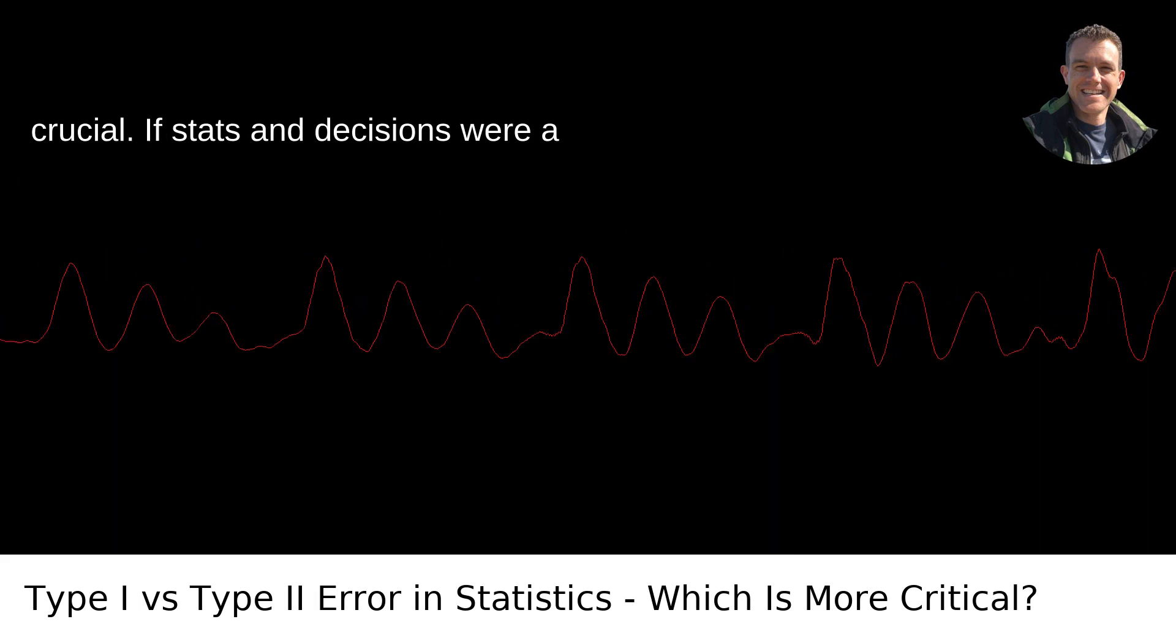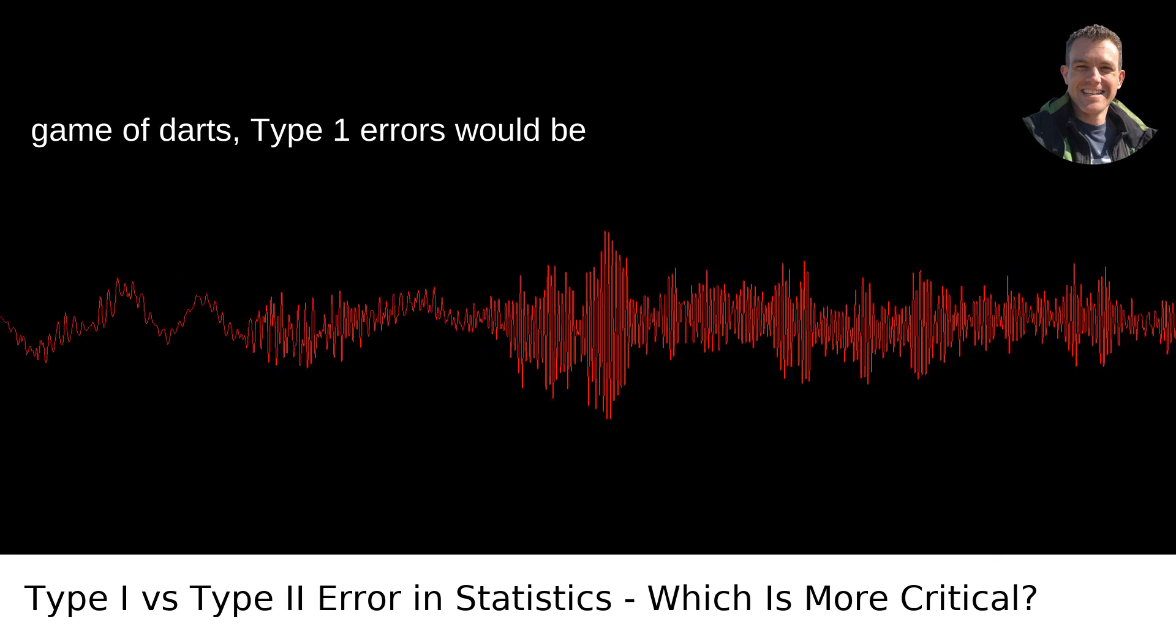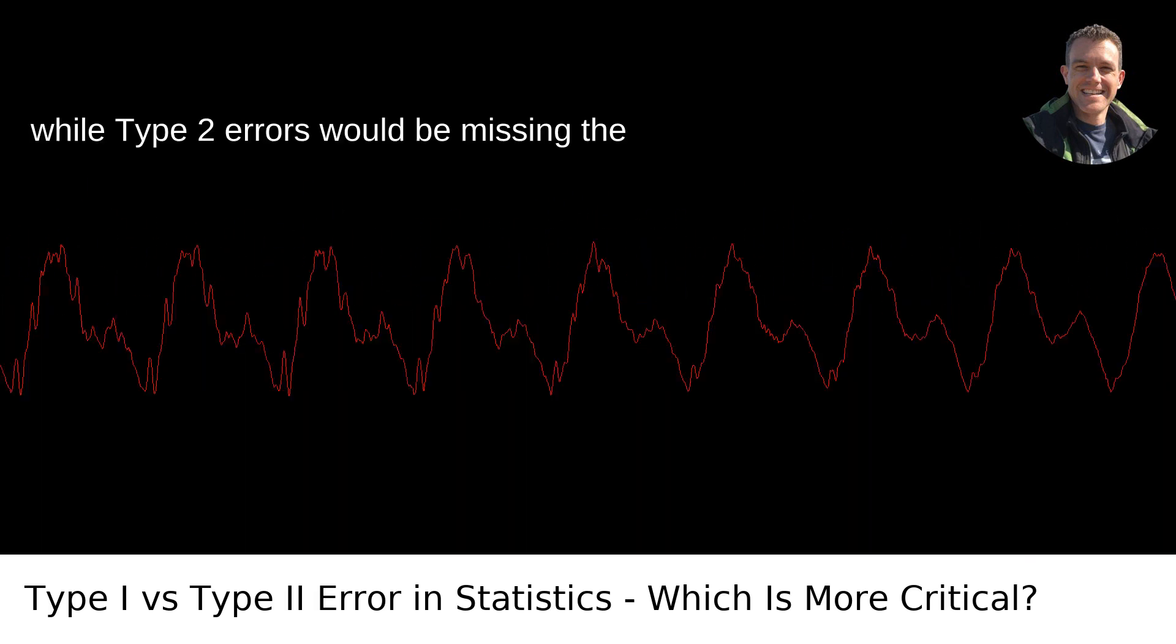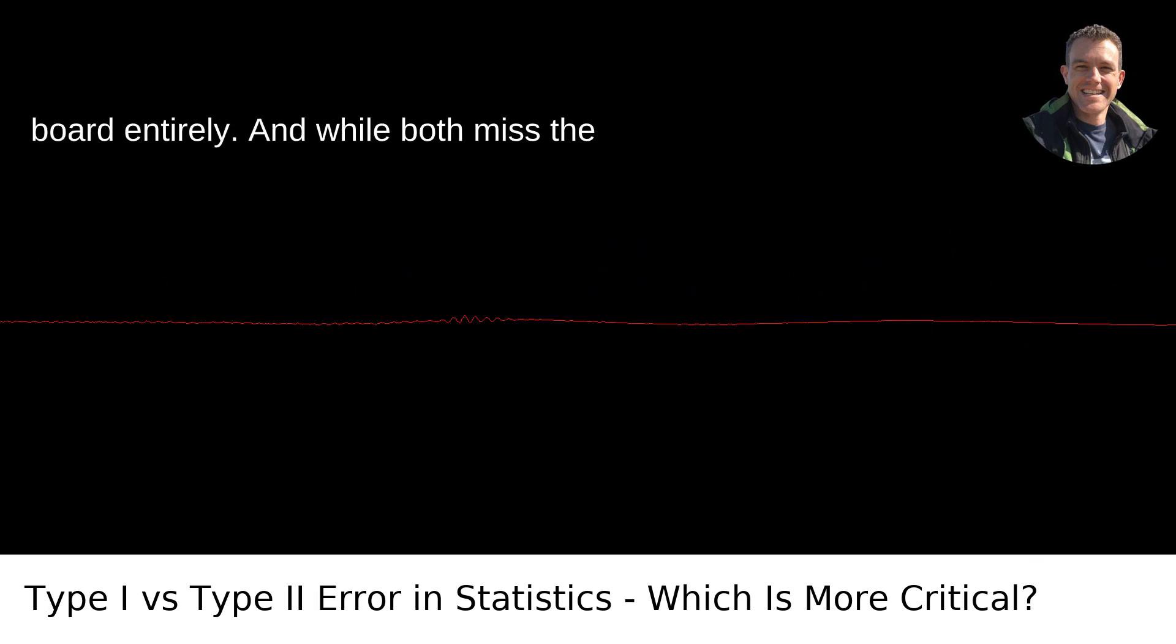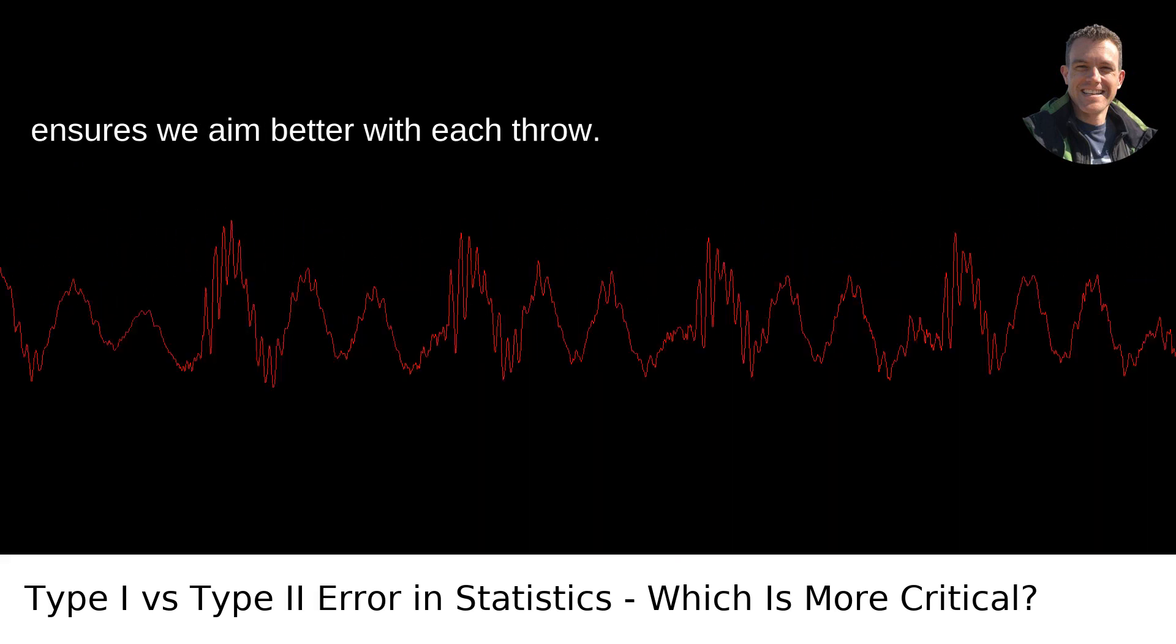If stats and decisions were a game of darts, Type 1 errors would be hitting the bullseye on the wrong target, while Type 2 errors would be missing the board entirely. And while both miss the mark, understanding their differences ensures we aim better with each throw.